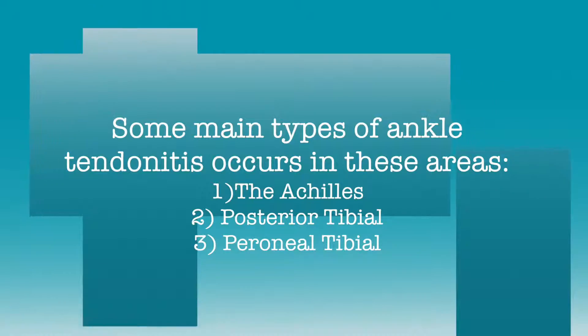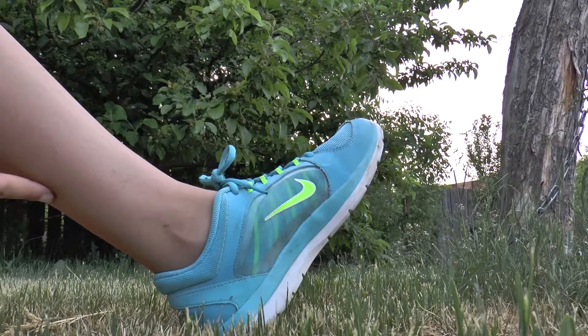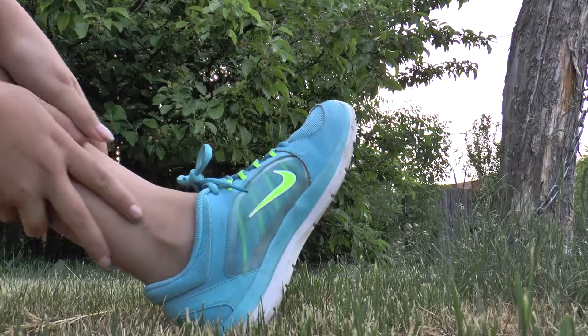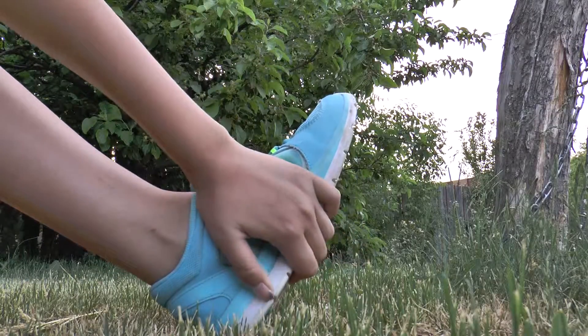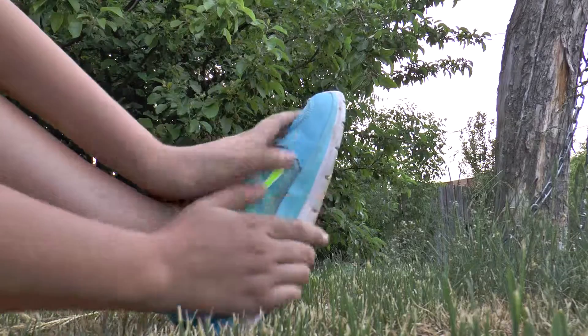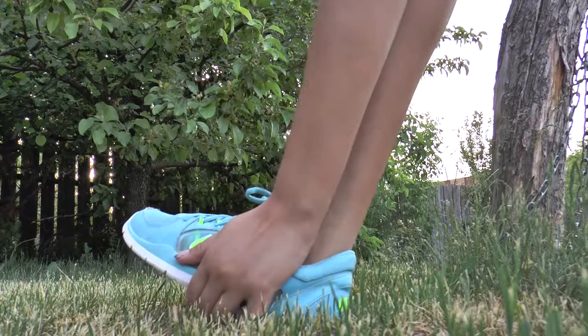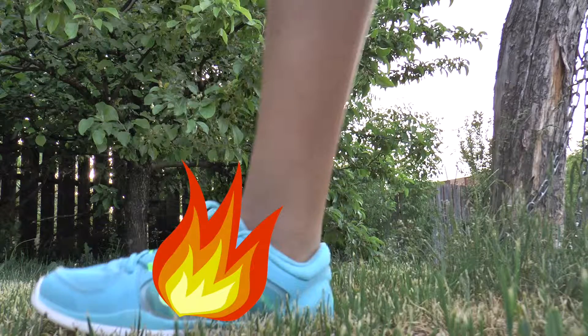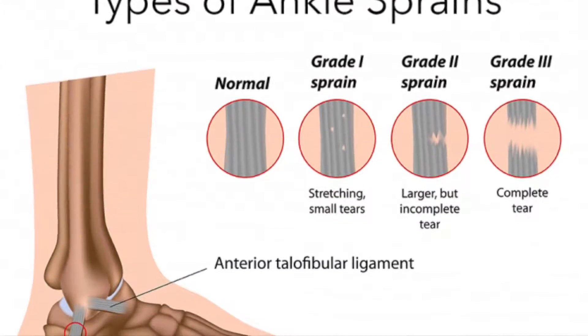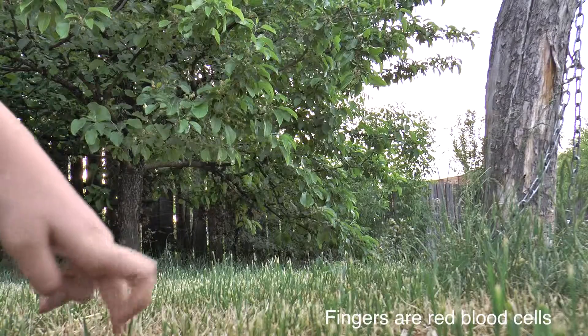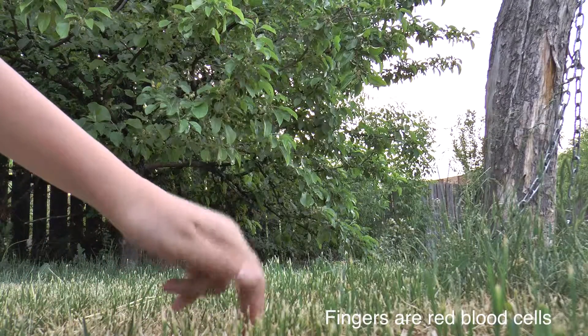Some main types of ankle tendonitis occur in these areas: the Achilles, which causes discomfort in the Achilles tendon; the posterior tibial, which causes pain on the inner side of your ankle; and the peroneal tibial, which causes inflammation along the outer edge of your heel.